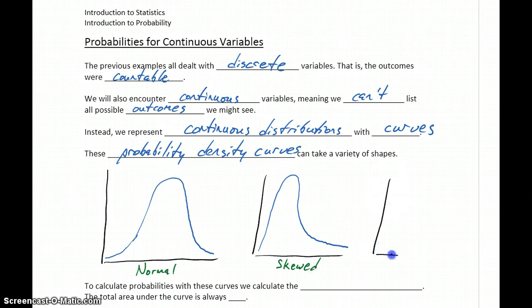Or we could have what's called a uniform distribution, meaning all the frequencies or the likelihood of all of the different outcomes are exactly the same. So no matter what different outcome we're considering, basically they all have these equally likely probabilities, equally likely outcomes of occurring.